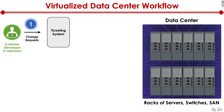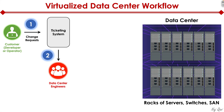They may have a business justification: 'I designed this new app called Nudge App. It's going to be an awesome web app. I need eight core CPUs, 16 gigs of RAM, and 100 gig of storage.' That's the request in the ticketing system.